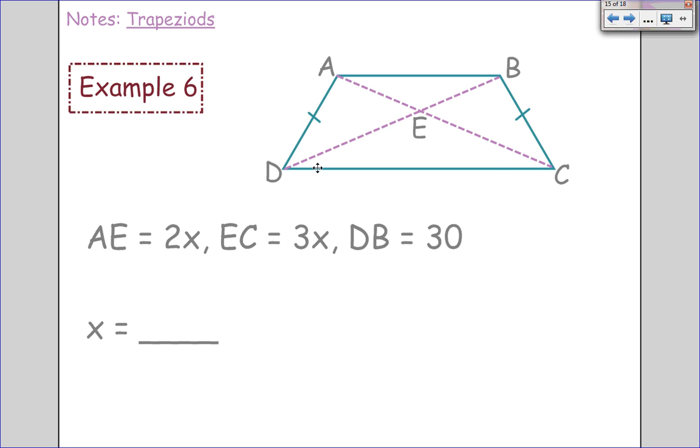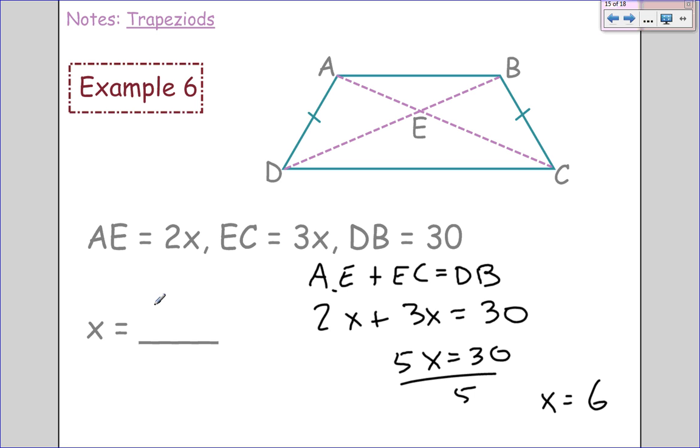So I'm giving you AE, EC, and DB. What do you notice about AE and EC? Well, AE is this part, EC is this part, and DB is the whole line. So AE plus EC equals DB. So 2x plus 3x equals 30. 5x equals 30. Divide by 5, so x equals 6. Make sure you realize that those diagonals can be set equal to each other. We used two different things here because it was two parts of the diagonal equaled the whole.